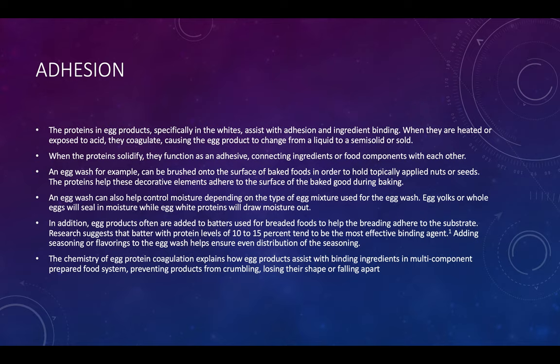Egg products are often added to batters used for breaded foods to help the breading adhere to the substrate. Research suggests that batters with protein levels of about 10 to 15 percent tend to be the most effective binding agents. Adding seasoning or flavoring to egg wash helps to ensure even distribution of seasoning.